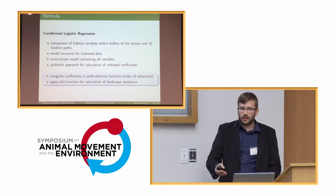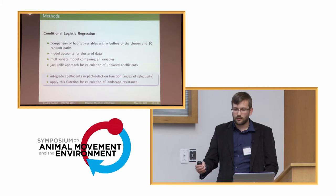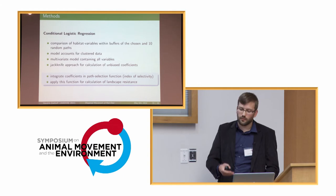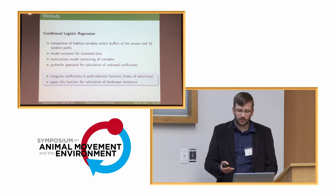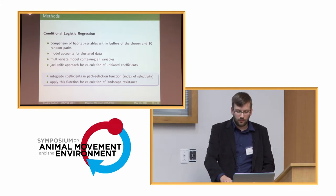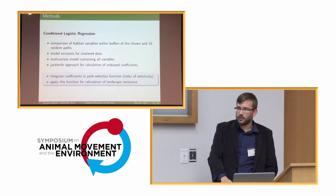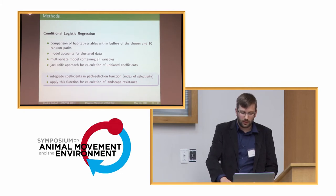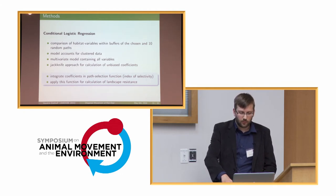This path selection function is then used to develop resistance surfaces of the landscape, assigning a cost value between zero (very low resistance) and 100 (highest resistance) to different parts of the landscape.